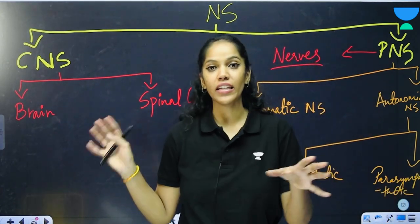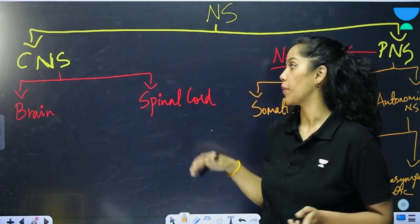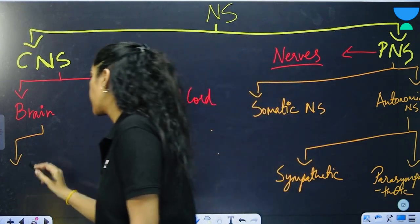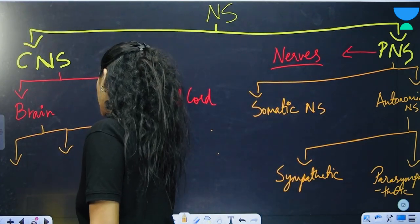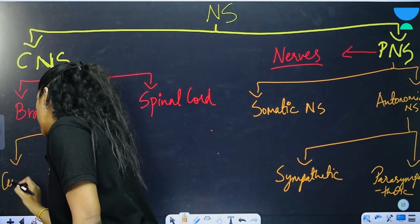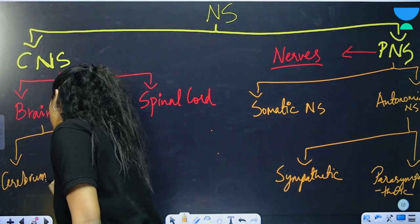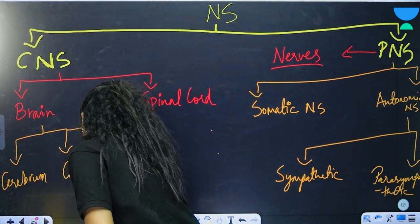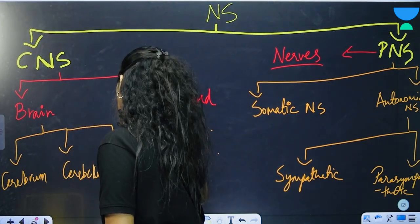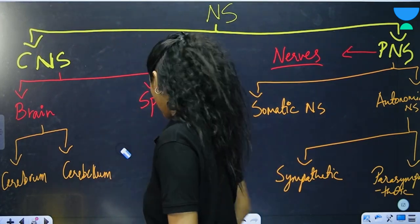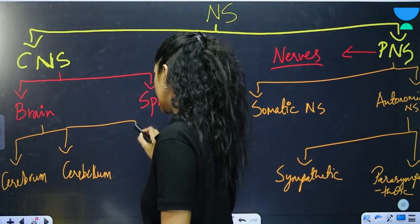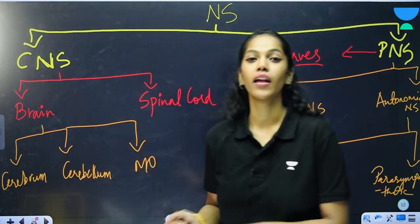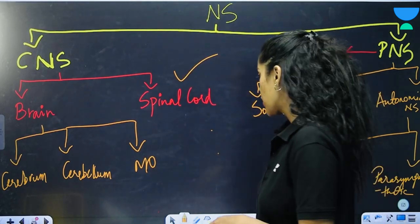In part two of our rapid revision, we also saw that the brain comprises three primary regions: the cerebrum, the cerebellum, and the medulla oblongata. From here we are going to be delving into the spinal cord to begin with.